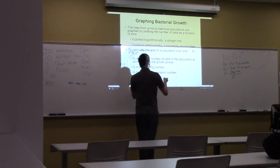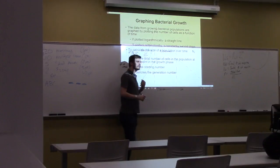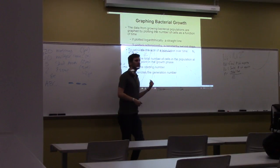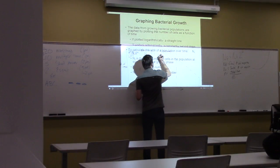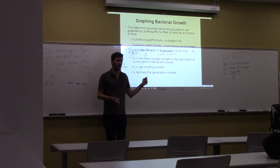What about the next curve? What's happening here? First of all, what's this called? Stationary. And what's happening here? They run out of nutrients. So, there's no division. But it's not enough to kill them yet.